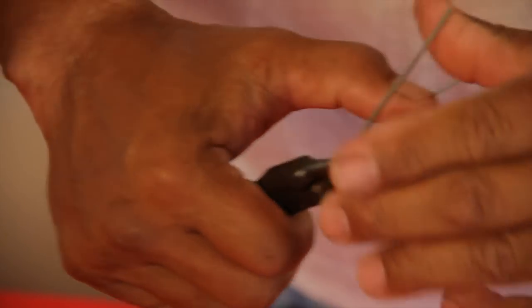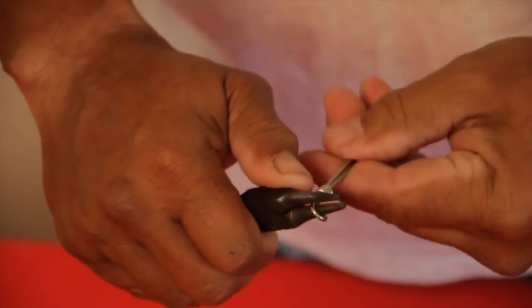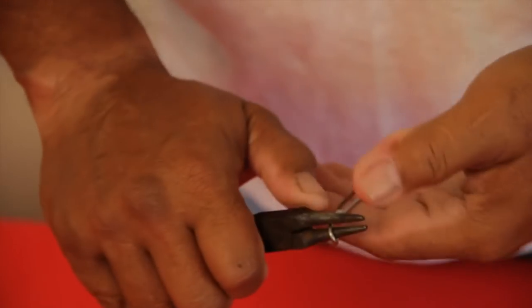And then what I do is, I just bend them back and forth. This guy would snap clean. And you're going to end up with this loop right here.